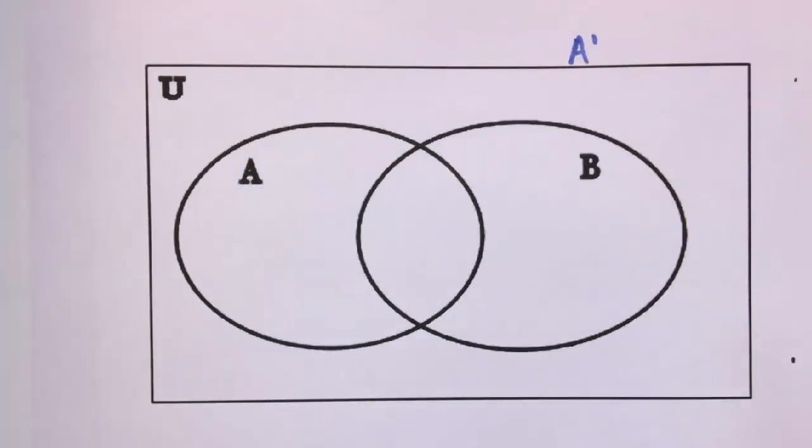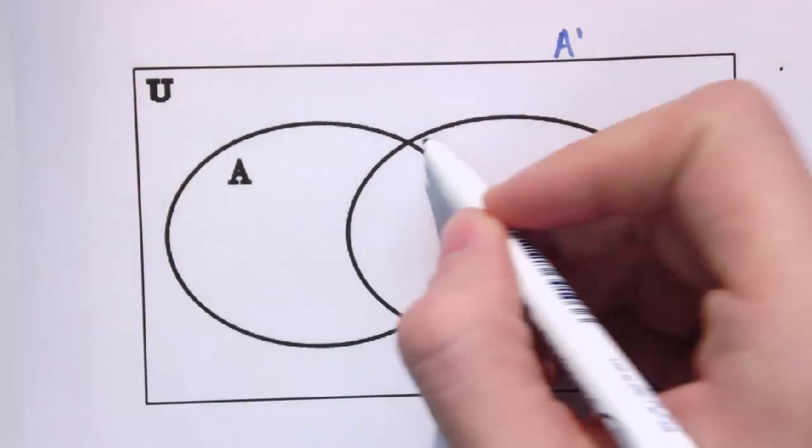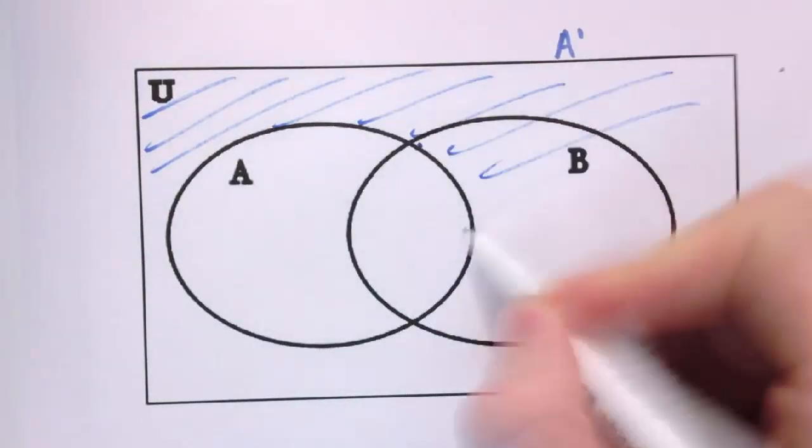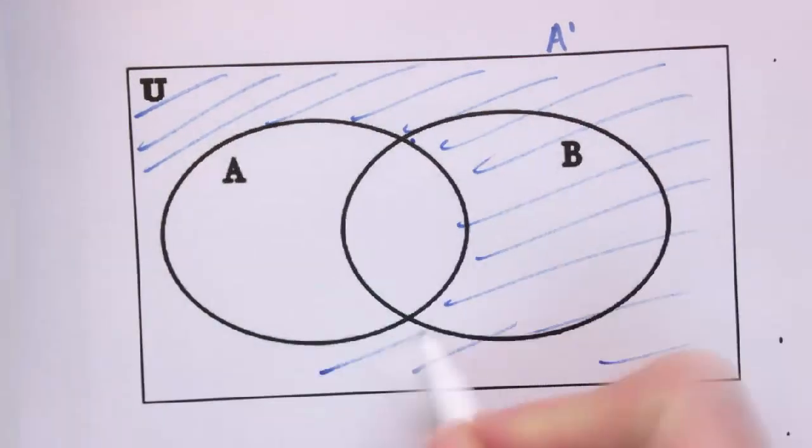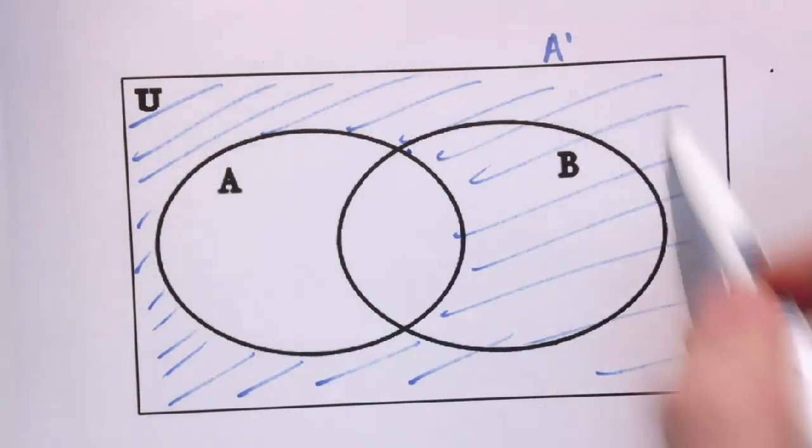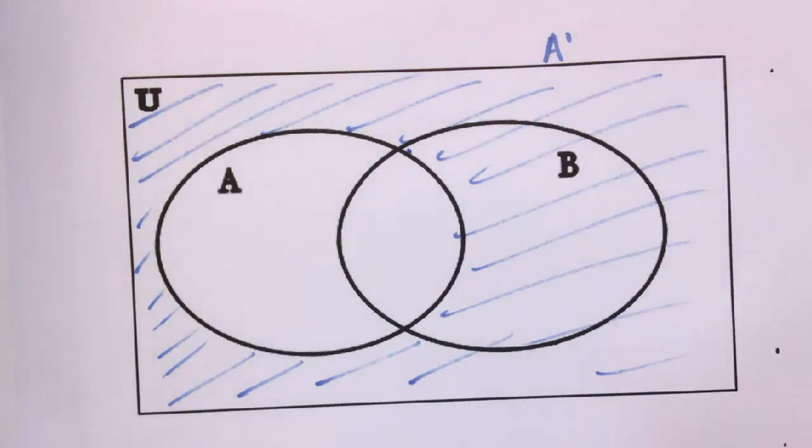People sometimes find this next one slightly confusing, which is just the set not A, how to shade that, because it actually gets a bit confused with the role of B in here. But this has nothing to do with B, so things that are not in A are just anything that's not in A, so it doesn't really matter about B, so it's everything that's outside of A, just ignoring B. So it contains the things that are in B and not in A, and also the things that are not in B and not in A, and that gives us the set not A.